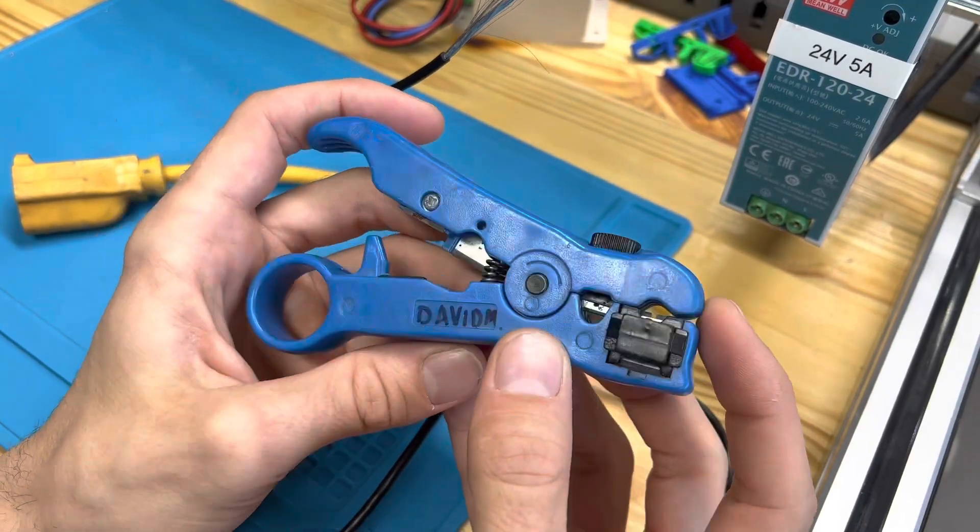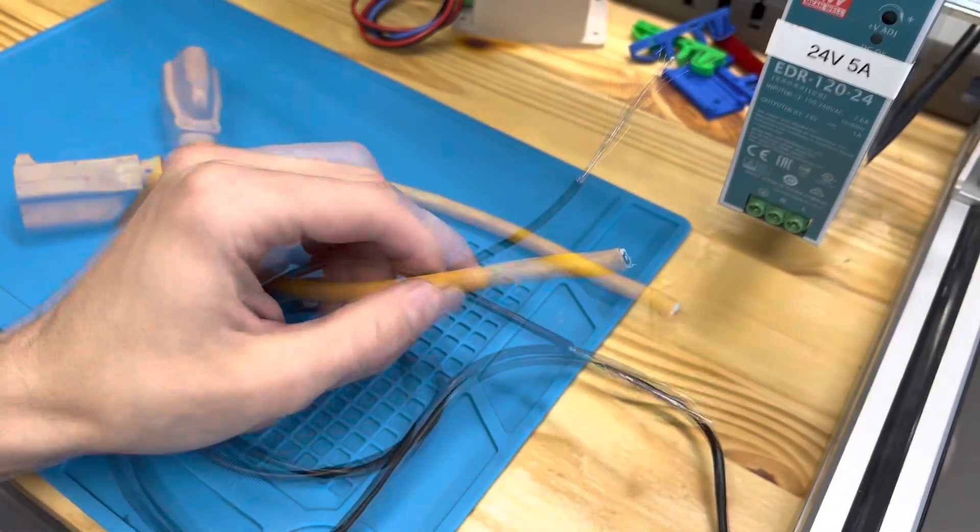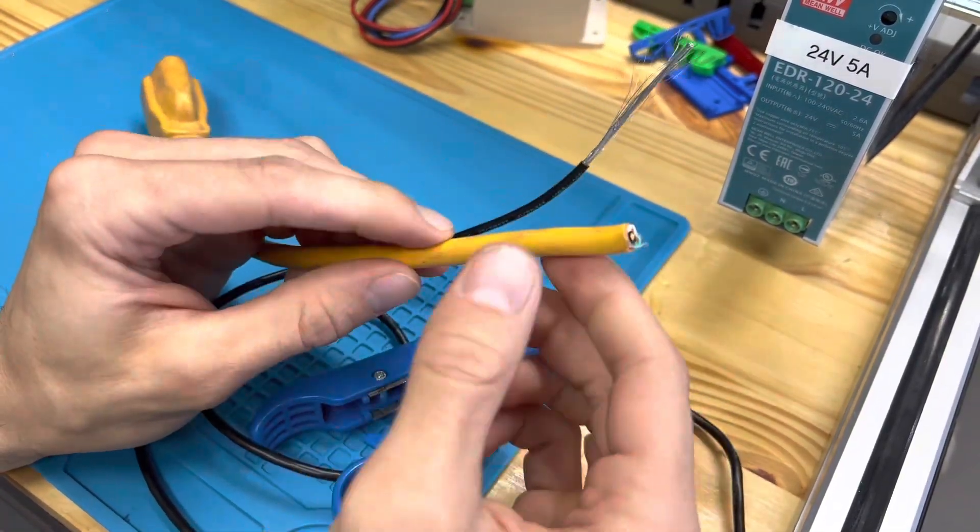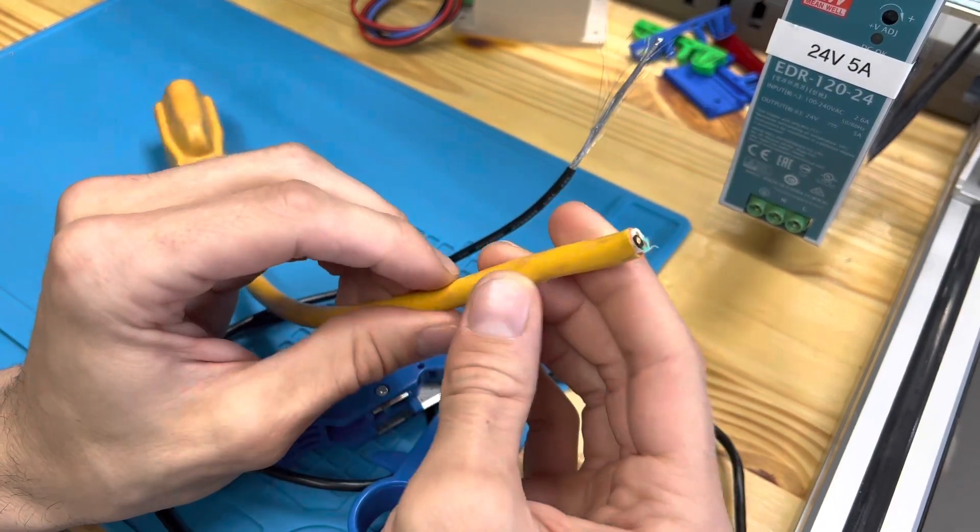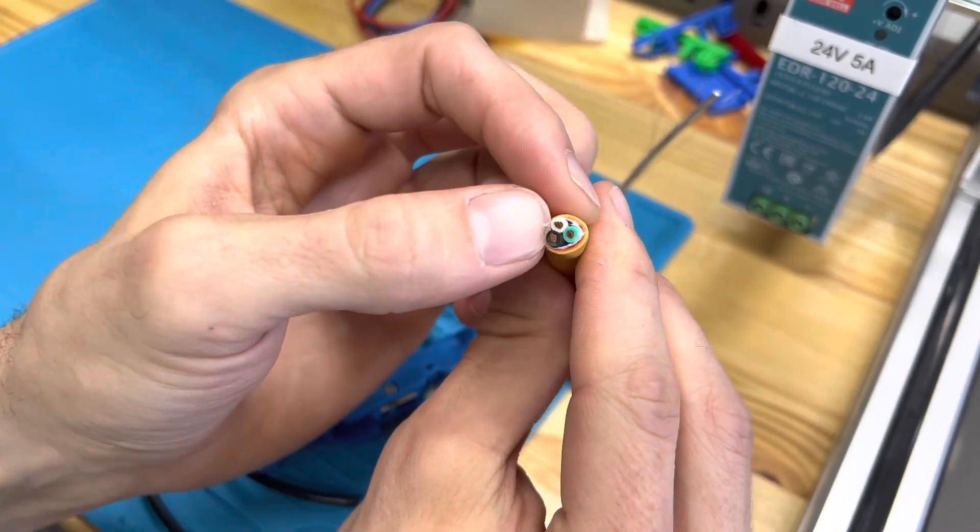In this video I'll show you how to use this universal type wire stripper for round cables. When used properly, this tool can remove the insulation off of the outside of a round cable without damaging the wires or the insulation that's on the inside.